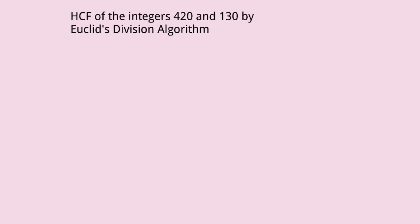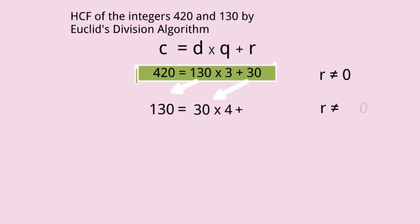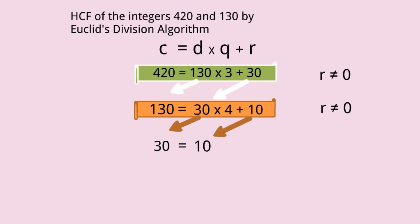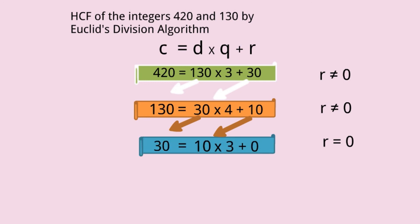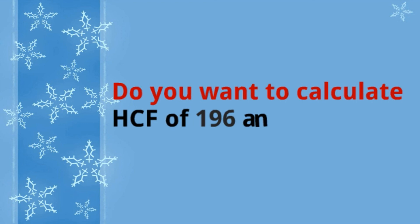One more example: HCF of 420 and 130. Applying c = dq + r: 420 = 130 × 3 + 30, r ≠ 0. Next step: 130 = 30 × 4 + 10, r ≠ 0. Next step: 30 = 10 × 3 + 0, r = 0. So 10 is the divisor and is the HCF of 420 and 130. Do you know how to calculate the HCF of 196 and 3820, or any bigger numbers?